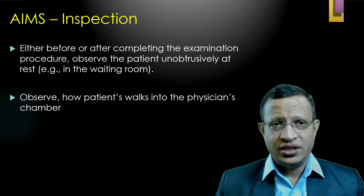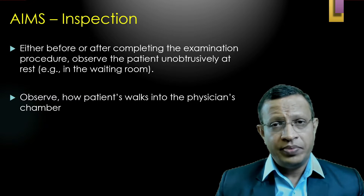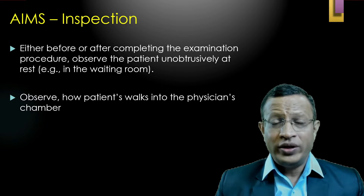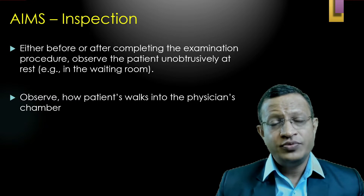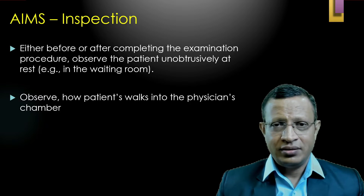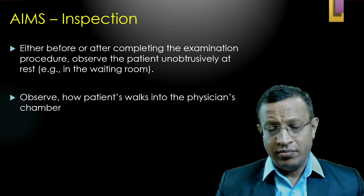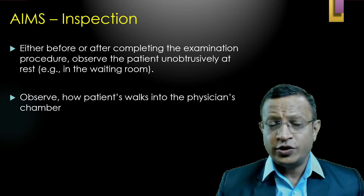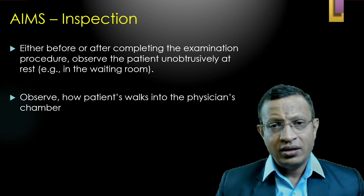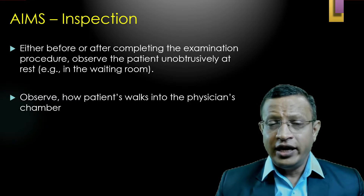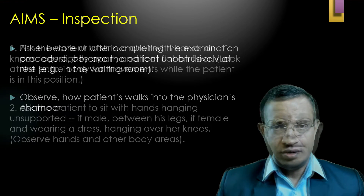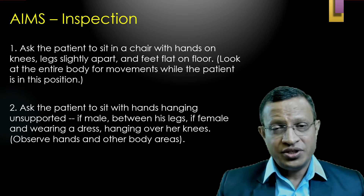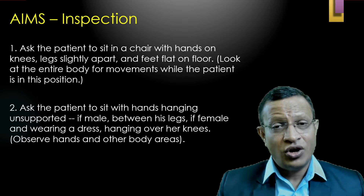Before starting the procedure, you need to observe the patient. When the patient is waiting in the room, observe how he walks into your chamber — his manner, demeanor, whether there are any abnormal movements, any problem in posture, how he is walking, any difficulties, any dystonias. Any abnormal movements from top to bottom need to be observed. Once the patient comes to your chamber, offer the chair without armrests.